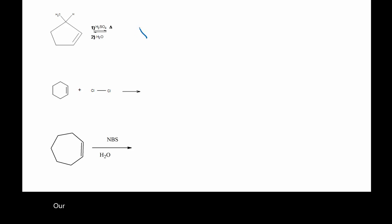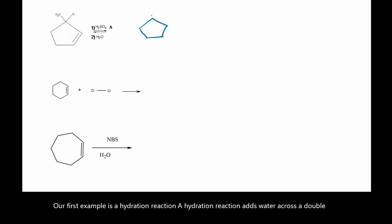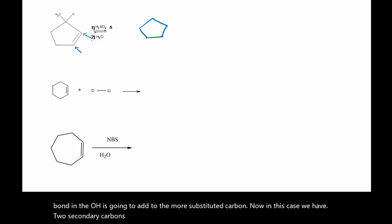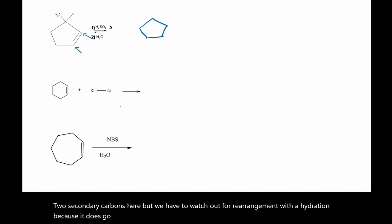Our first example is a hydration reaction. A hydration reaction adds water across a double bond, and the OH is going to add to the more substituted carbon. In this case we have two secondary carbons here, but we have to watch out for rearrangement with a hydration because it does go through that ionic mechanism.